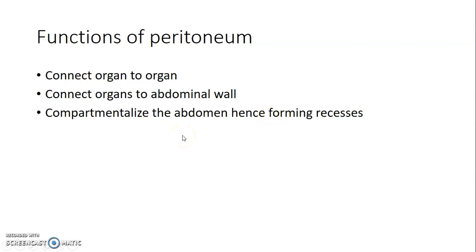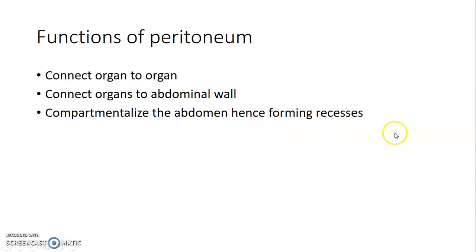The functions of the peritoneum include connecting organ to organ, connecting organs to the abdominal wall, and helping to compartmentalize organs. As a result, recesses may also form out of this compartmentalization.